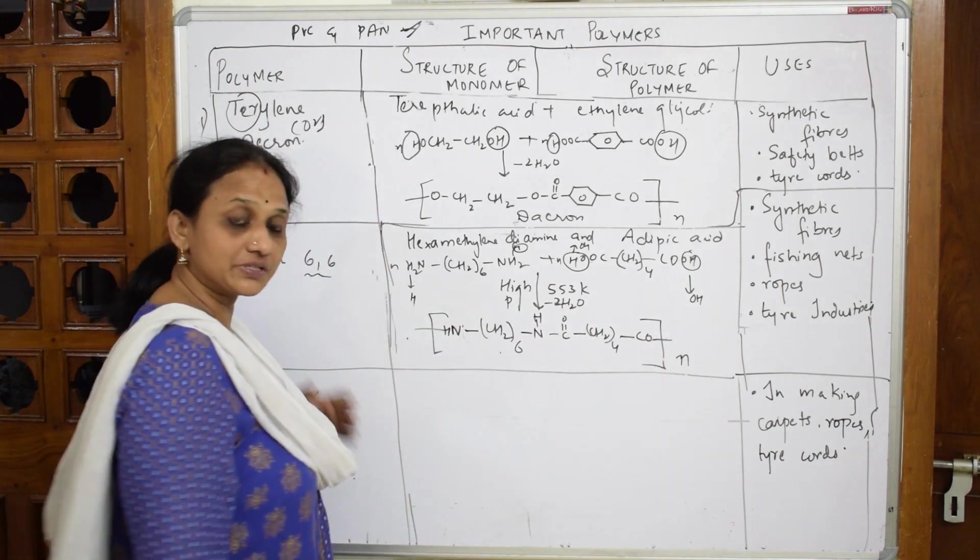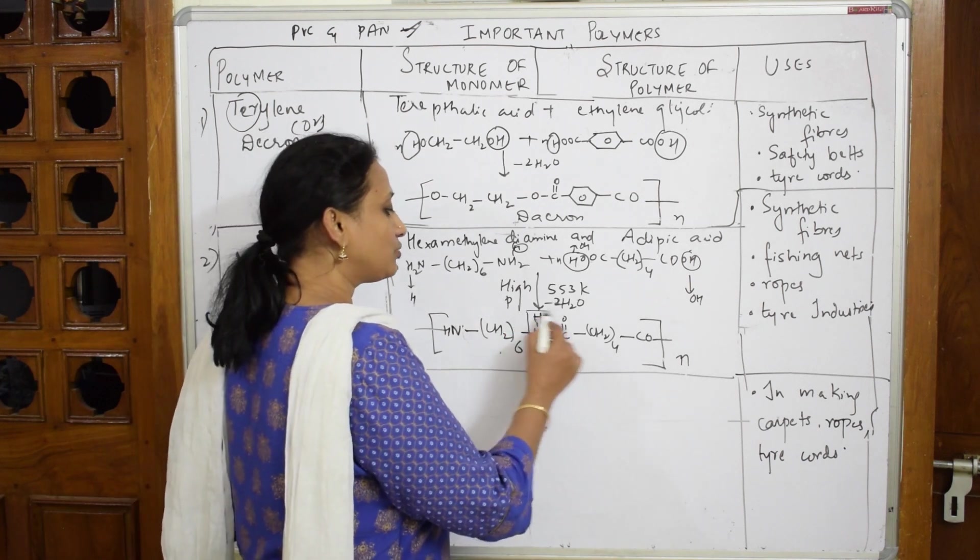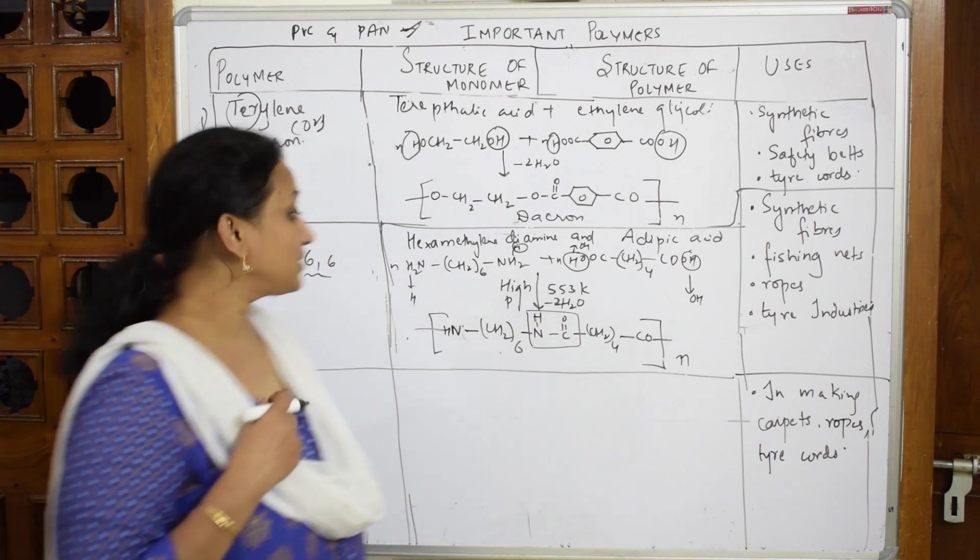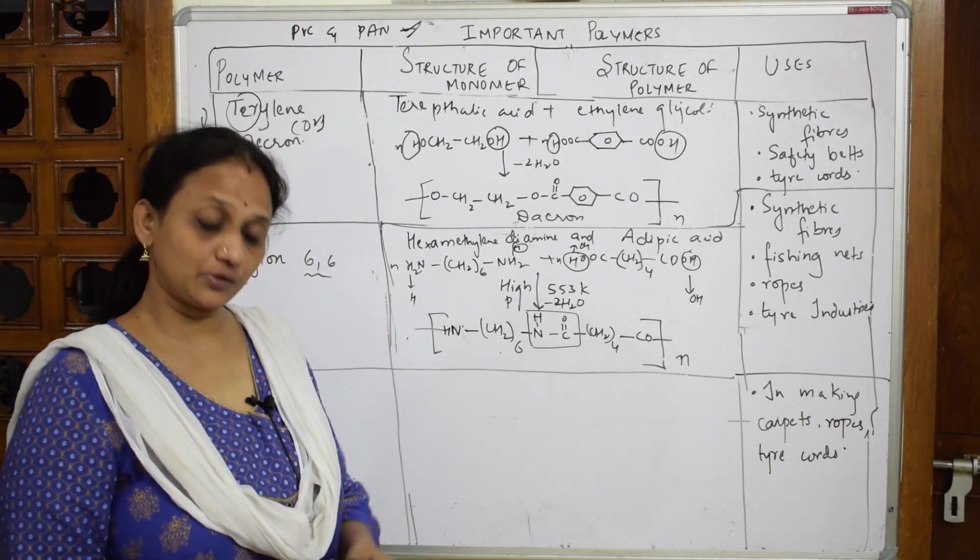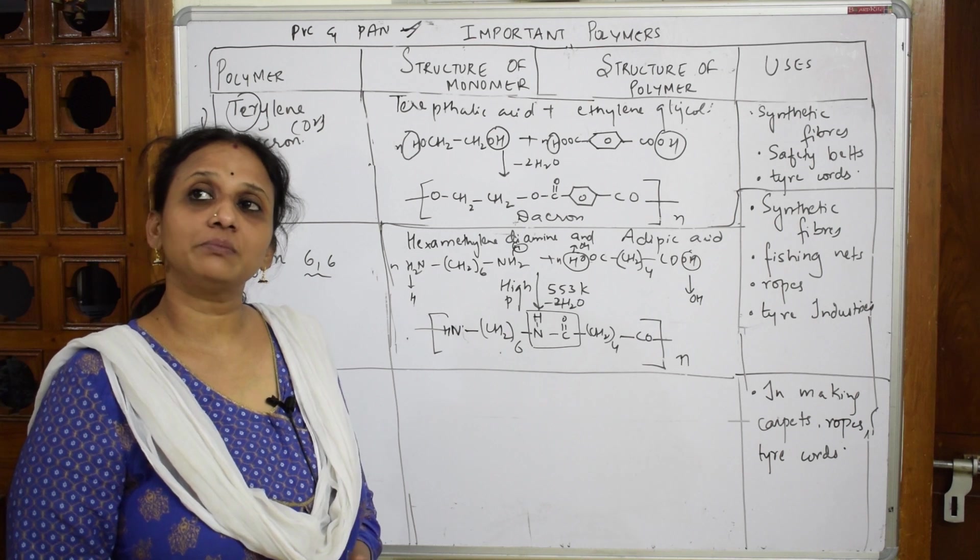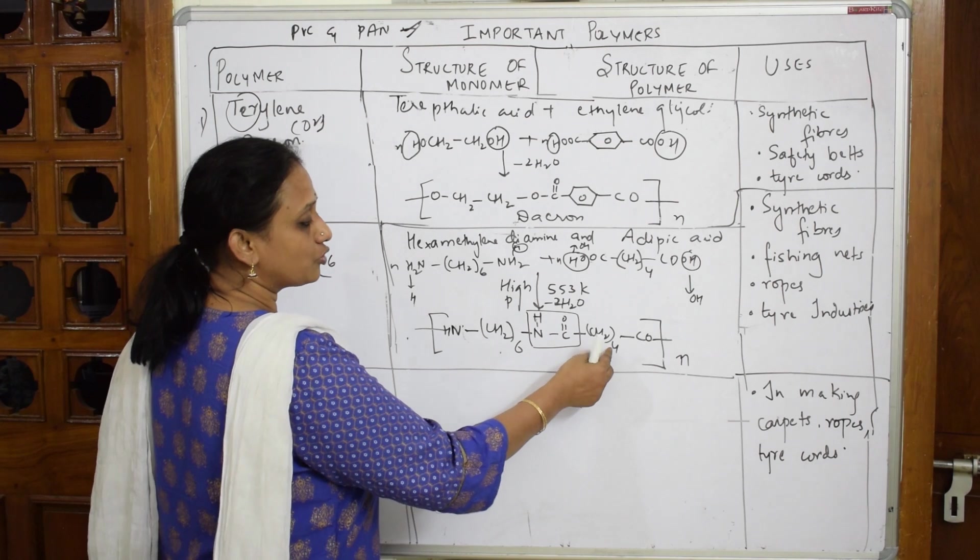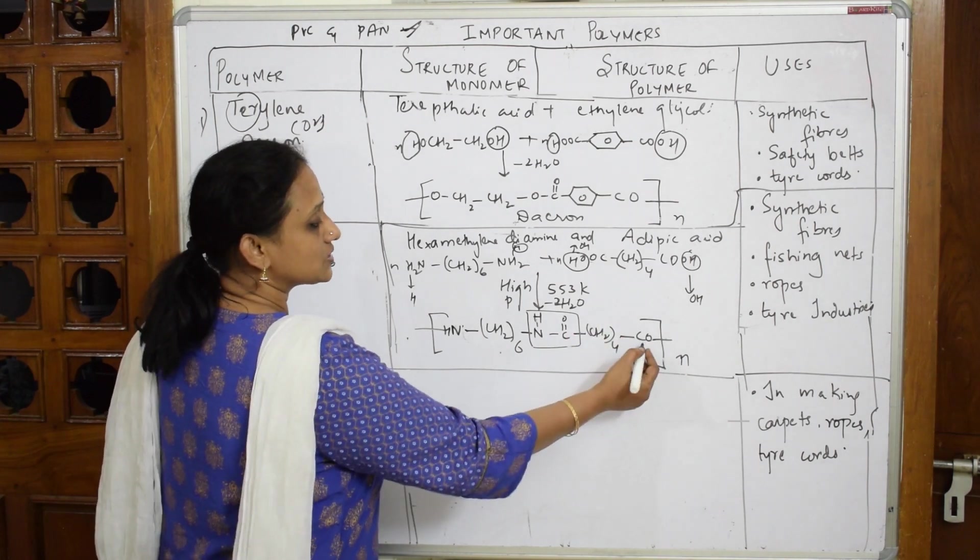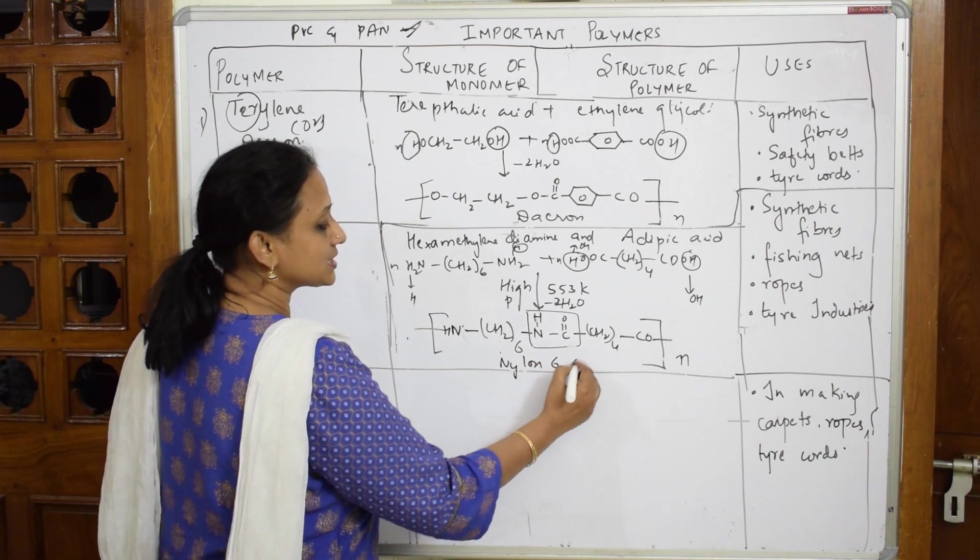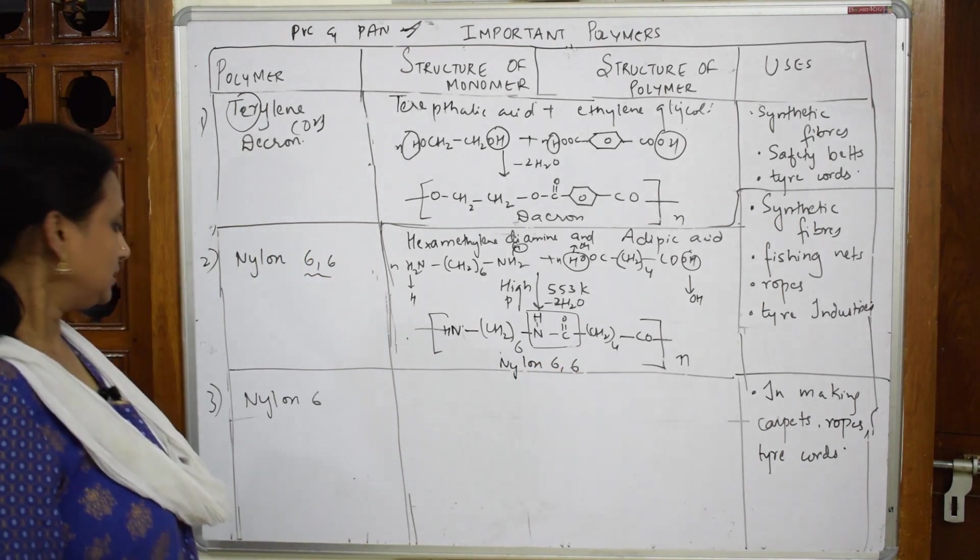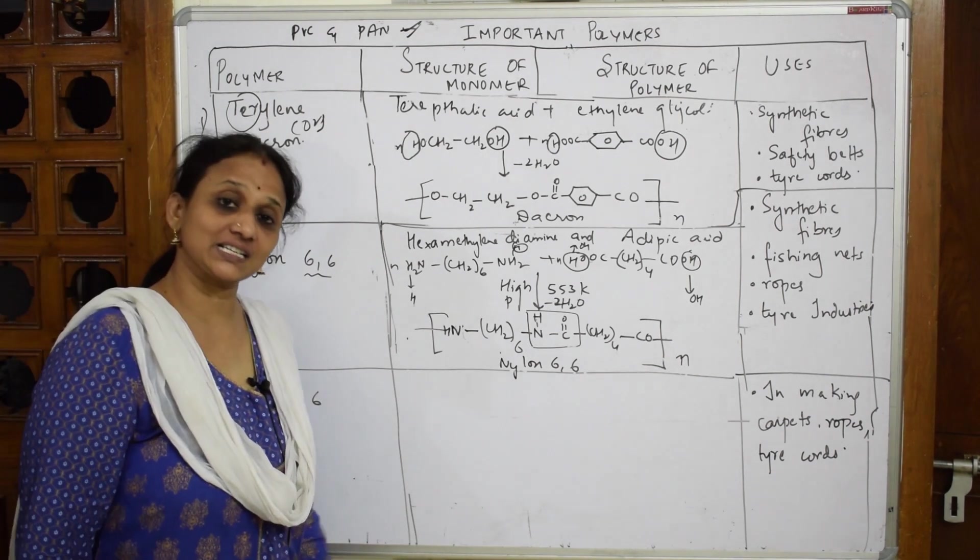Now observe carefully: there is a formation of an amide group in between. Look here - NH-CO is an amide group. That's why Nylon 6,6 comes under the category of polyamides. They'll ask you to write an example of polyamides, then you'll write this example. This is Nylon 6,6 because six and six - here there are six carbon atoms, here six carbon atoms.